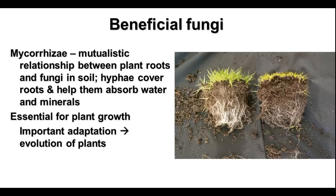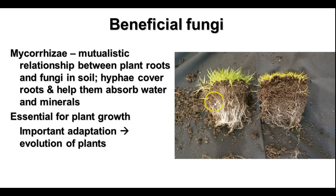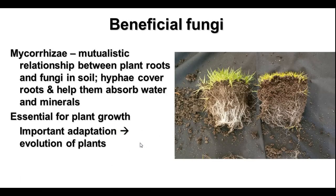There are also beneficial fungi, and this is really important to understand. Mycorrhizae are fungi that are mutualistic between plant roots and the soil — they help cover the roots and help them absorb water and minerals. Some mycorrhizae are essential for plant growth. You can see in these two grass samples that the one with mycorrhizae has much more extensive root development and healthier tops. Some plants can't survive without their associated mycorrhizae, making this a very important adaptation in plant evolution.